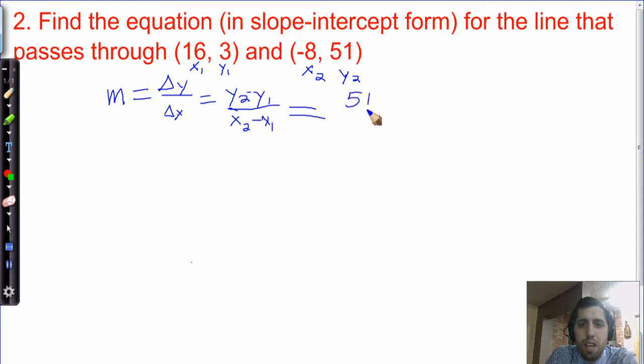So Y2, what is it? 51. Y1, what is it? Well, it's really easy to pick out right here. 3. X2, what is it? Negative 8. X1, what is it? 16. So what do we got here? 51 minus 3, 48. And negative 8 minus 16 or plus negative 16, that'd be negative 24. Can I simplify? Certainly. This is just a slope of negative 2.